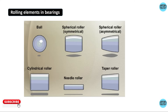The rolling element withstands the load from the shaft. The type of roller used in the bearing defines the load carrying capacity. Ball bearings have less contact area, while cylindrical and spherical rollers have more contact area. More contact area means more load carrying capacity, but also more friction.